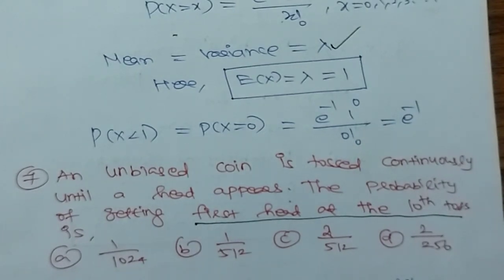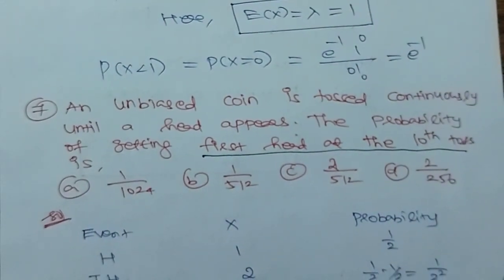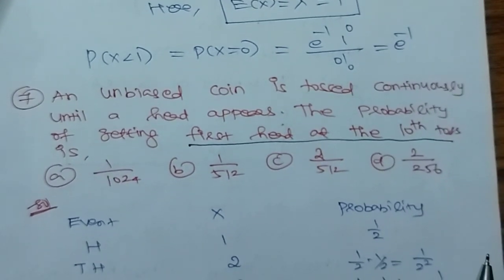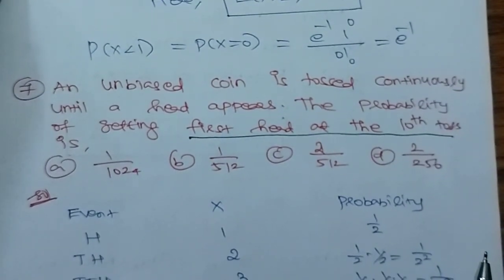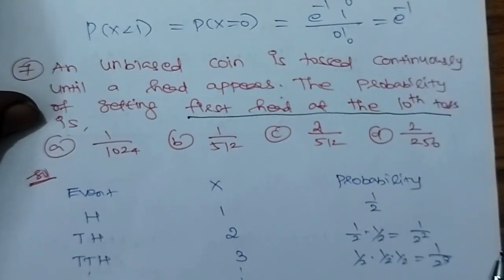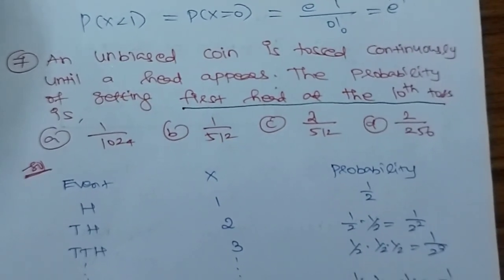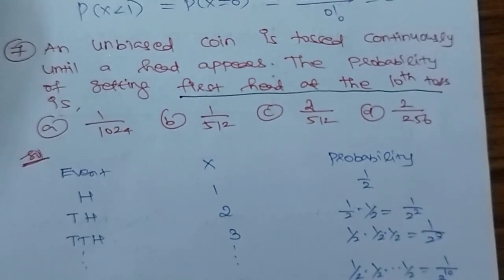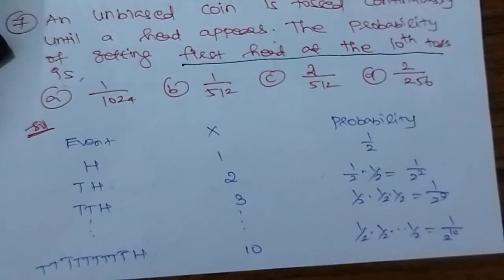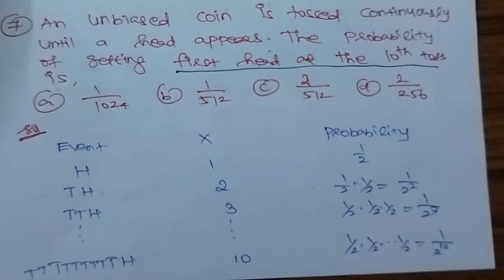Options B: 1/2^12, C: 2/2^12, D: 2/2^56. We need to find the probability. The first toss probability is 1/2, second toss (tail then head) is 1/2 squared, third is 1/2 cubed, and so on. At the 10th toss, the probability is 1/2^10, which is simply 1/1024.